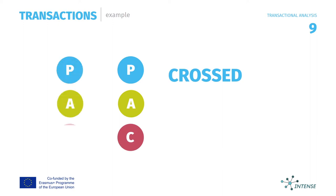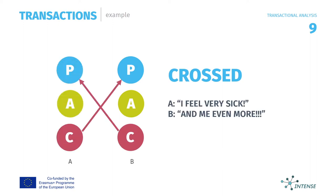In the third example, the respondent replies from the child ego state rather than the nurturing parent ego state as expected. When a transaction is crossed, it results in a breakdown of communication, and one or both individuals will need to shift ego states for communication to be re-established. For example: 'I feel very sick.' — 'And me even more.'